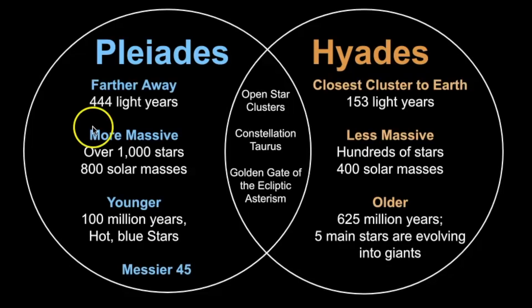These two star clusters together are known as the Golden Gate of the Ecliptic asterism. But there are differences. So the Pleiades is farther away than the Hyades. The Hyades is known as the closest star cluster to Earth.